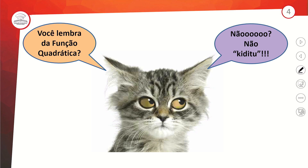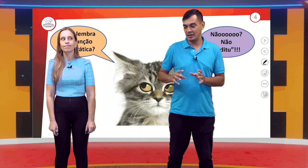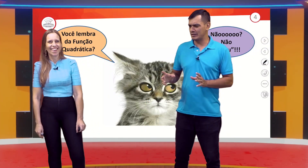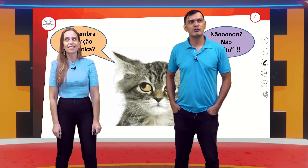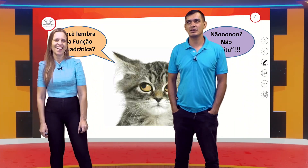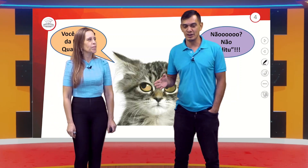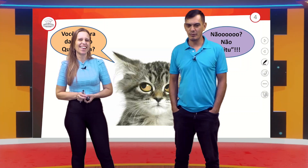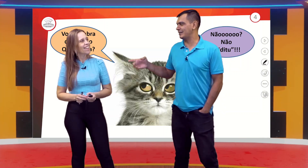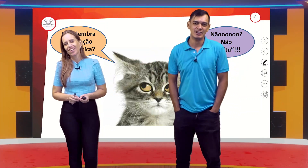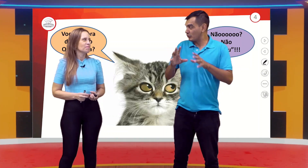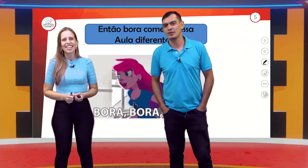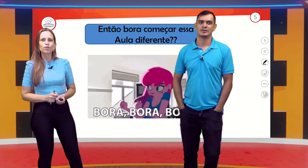Quando fica pensativo, é porque está refletindo. Às vezes alguém chega e pergunta: 'Você lembra do fulano?' Aí você fica... 'Fulano, peraí... aquele que é filho da Dona Joana, primo não sei de quem.' Aí você vai encaixando as peças e lembra. Às vezes falta só isso — só esses encaixezinhos. Vamos começar essa aula diferente?